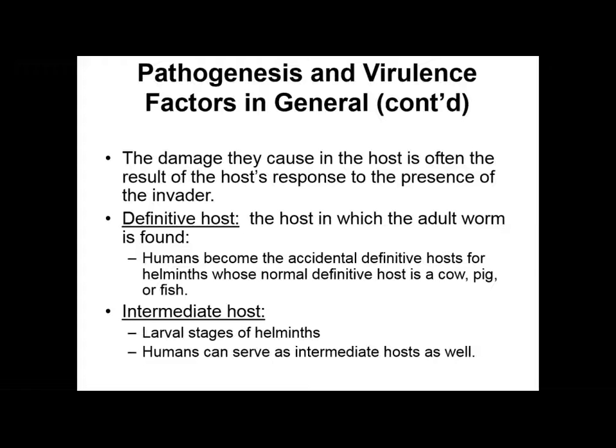A lot of the damage caused by helminths is triggered by an inappropriate immune response within the host. There are definitive and intermediate hosts. The definitive host is where the adult worm is always found. Humans have often become accidental definitive hosts for helminths that typically focus on cows, pigs, and fish — because we eat those animals and ingest the helminths. Intermediate hosts only carry the larval stage, and humans are native intermediate hosts for several helminth species.